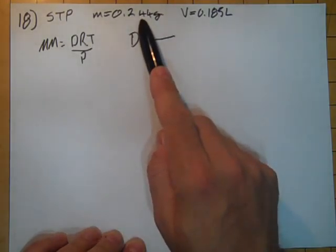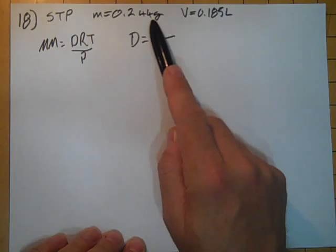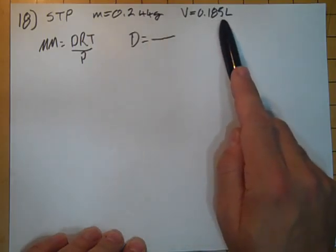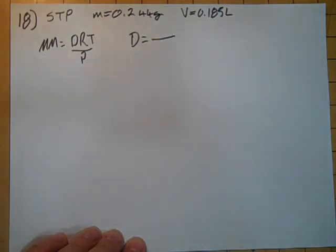The mass of the gas sample is 0.244 grams. That mass has a volume of 185 milliliters, but I converted it to liters because we're using the ideal gas law.